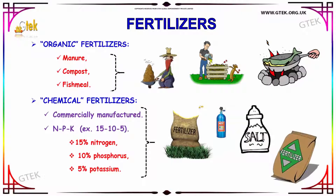Let us see about fertilizer. Fertilizer is divided into two types: organic fertilizer and chemical fertilizer. In organic fertilizer you have manure, compost, and fish meal. Chemical fertilizer is commercially manufactured — NPK — which is 15% nitrogen, 10% phosphorus, and 5% potassium.